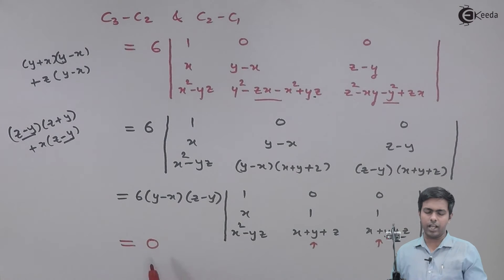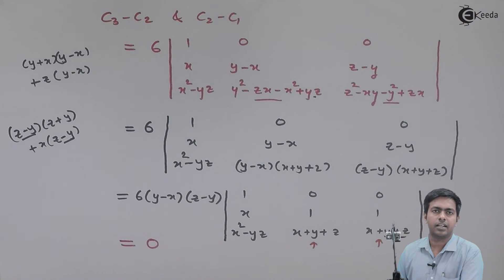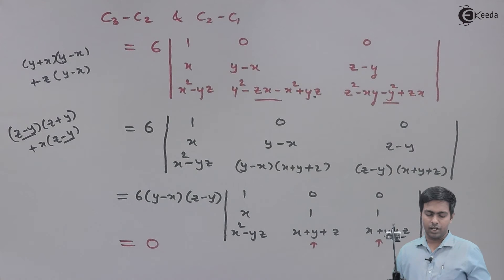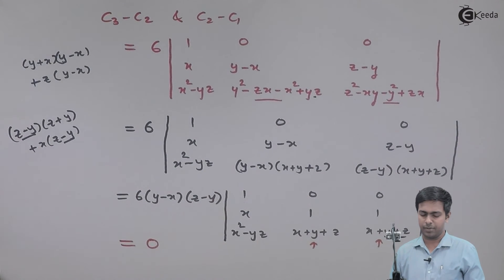Since the Jacobian equals zero, we can definitely say that there is a relationship between u, v, and w. Now let's find out that relationship.